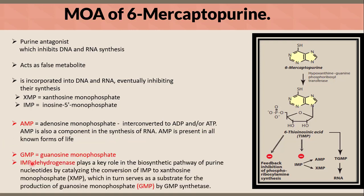IMP dehydrogenase, or inosine 5-monophosphate dehydrogenase, plays a key role in the biosynthesis pathway of purine nucleotides by catalyzing the conversion of IMP to xanthosine monophosphate or XMP, which in turn serves as a substrate for the production of guanosine monophosphate or GMP by GMP synthetase.